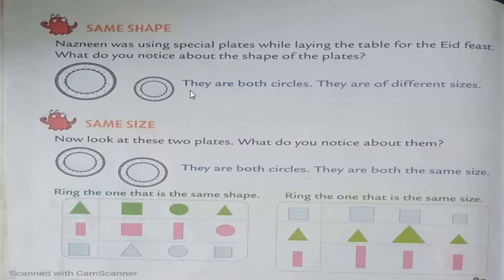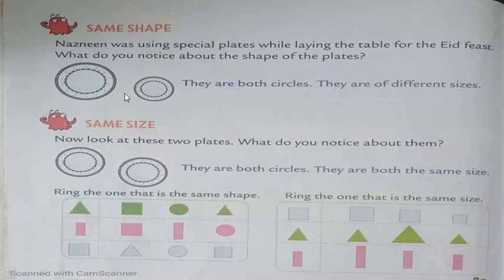But noticing only that they are circles is not enough. While observing these plates, what else do you notice? Do you notice the size? They are of different sizes. What is the difference in both these plates? They both are different in size — this is bigger and this is smaller. This is the comparison of shapes that we are going to learn.